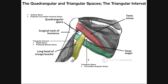The first space is the quadrangular space — the most superior one. It's quadrangular because it has four sides, kind of like a rectangle at an angle. Two structures pass through the quadrangular space: the axillary nerve and the posterior circumflex humeral artery. The axillary nerve innervates the deltoid muscle and also teres minor, so we'd see the axillary nerve and posterior circumflex humeral artery coming through posteriorly, and then the axillary nerve would innervate teres minor. The four boundaries of the quadrangular space are: teres minor, long head of triceps brachii, teres major, and the neck of the humerus.